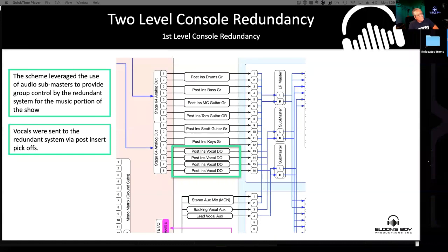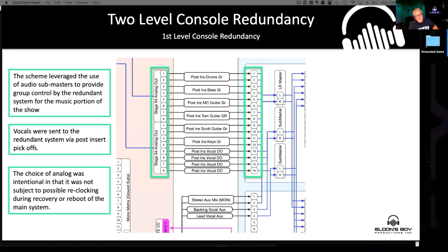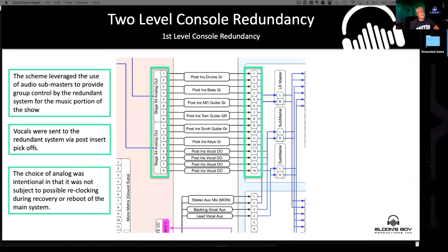Post-insert vocal direct outs would also go over to the console. We intentionally chose analog to do this — we took analog outputs of the stage rack and sent them to the analog inputs of the S3LX, primarily so we didn't have to worry about any clocking issues. If it required some sort of reboot and reclock, we wouldn't have to experience that in the S3LX.